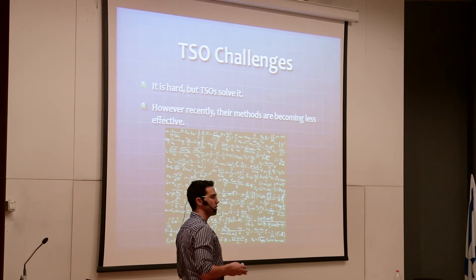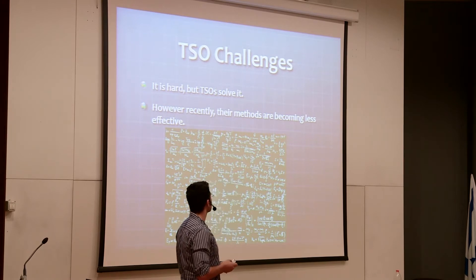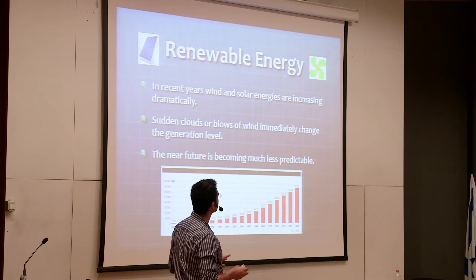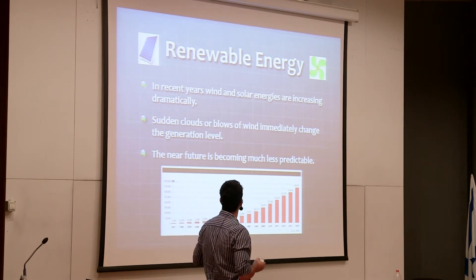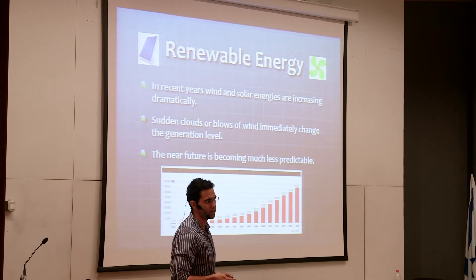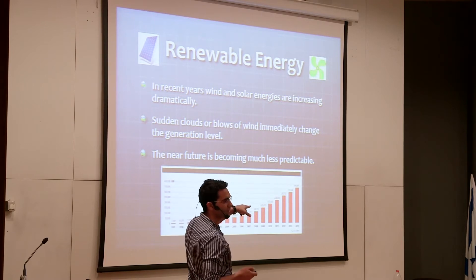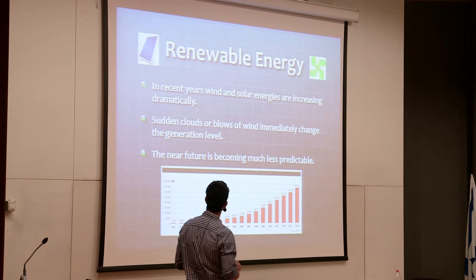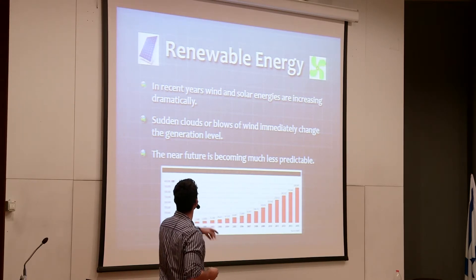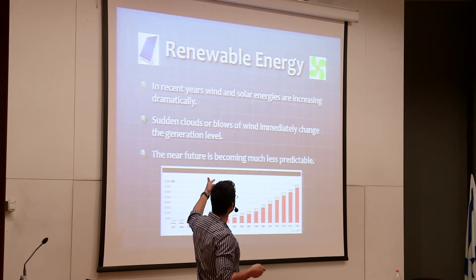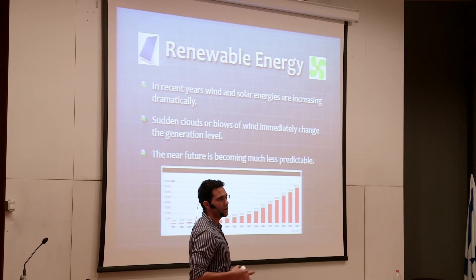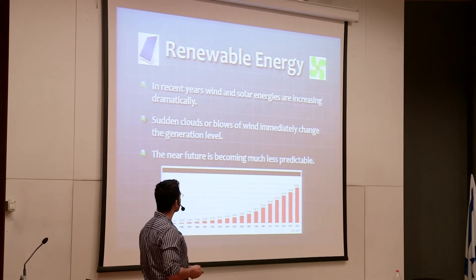TSOs are doing a good job, but recently their methods are becoming less effective, and the reason is renewable energy. In recent years there's been a huge penetration of wind and solar into worldwide power grids. The installed wind capacity is increasing at an accelerating rate. The more renewable generation we have, the more random and stochastic the system becomes. Sudden clouds or gusts of wind immediately change generation levels, and we can't predict more than a minute ahead how the wind or clouds will behave. So the near future is becoming much less predictable, and the mathematical methods TSOs use are not up to date.